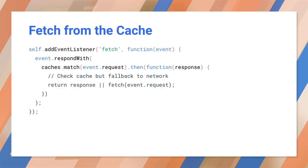Here we add a fetch listener to the service worker. When a fetch is made for a resource, we try to find the resource in the cache and return it. However, if it isn't in the cache, we still want to go to the network for it.